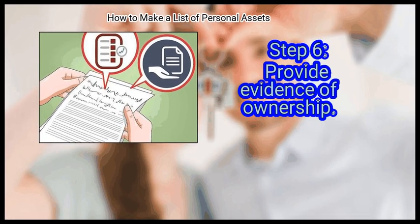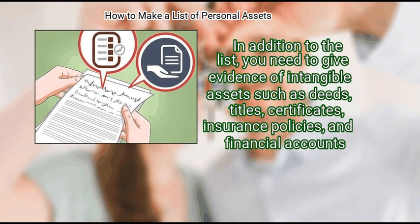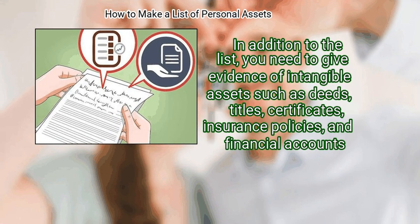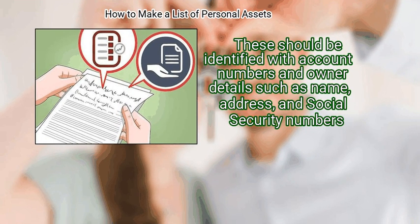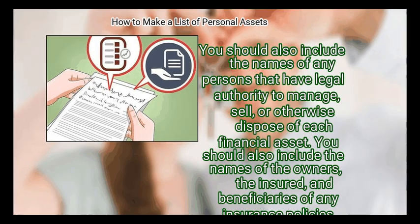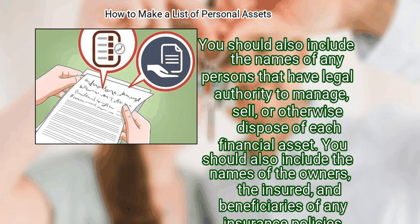Step 6: Provide evidence of ownership. In addition to the list, you need to give evidence of intangible assets such as deeds, titles, certificates, insurance policies, and financial accounts. These should be identified with account numbers and owner details such as name, address, and social security numbers. You should also include the names of any persons that have legal authority to manage, sell, or otherwise dispose of each financial asset, as well as the names of the owners, the insured, and beneficiaries of any insurance policies.